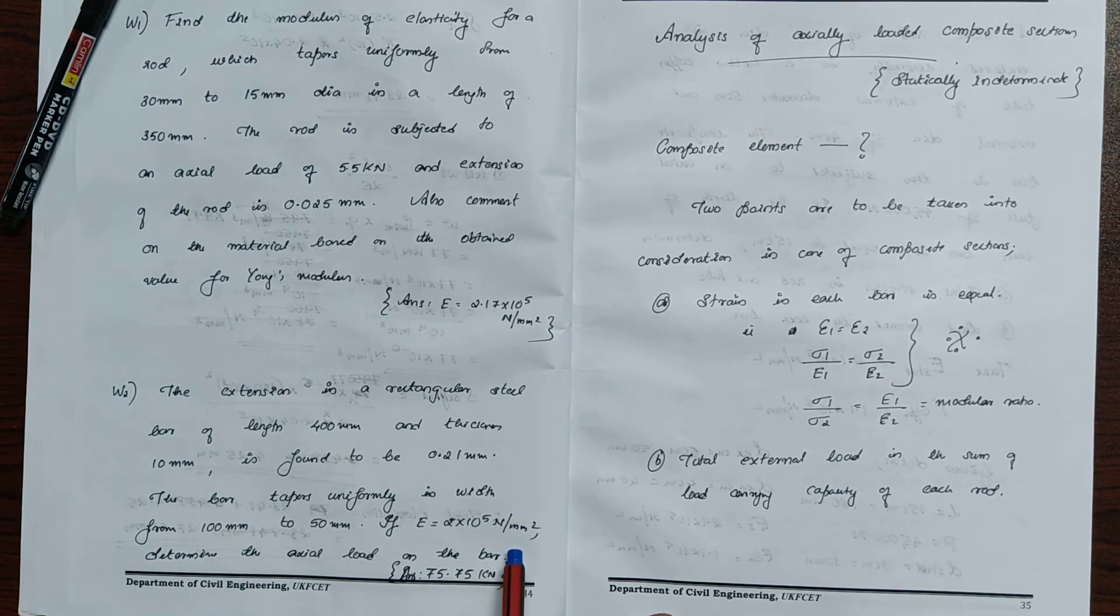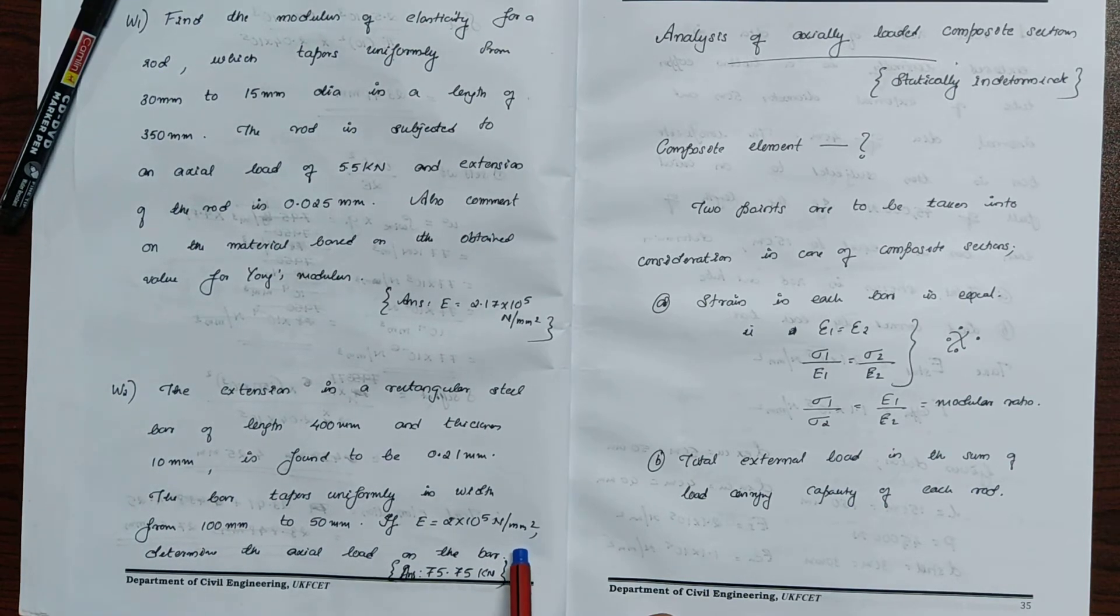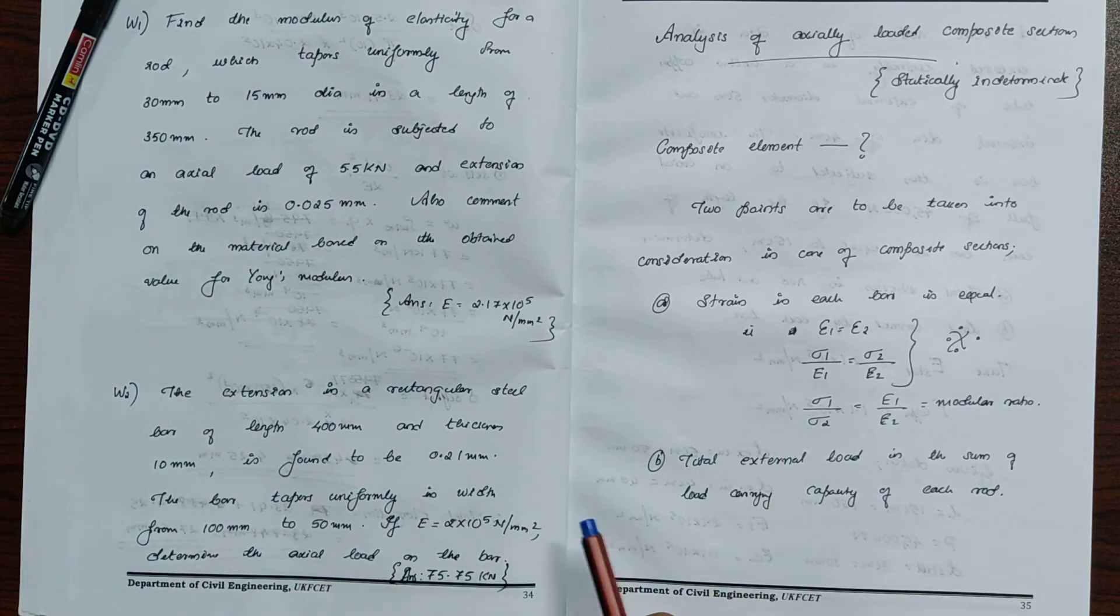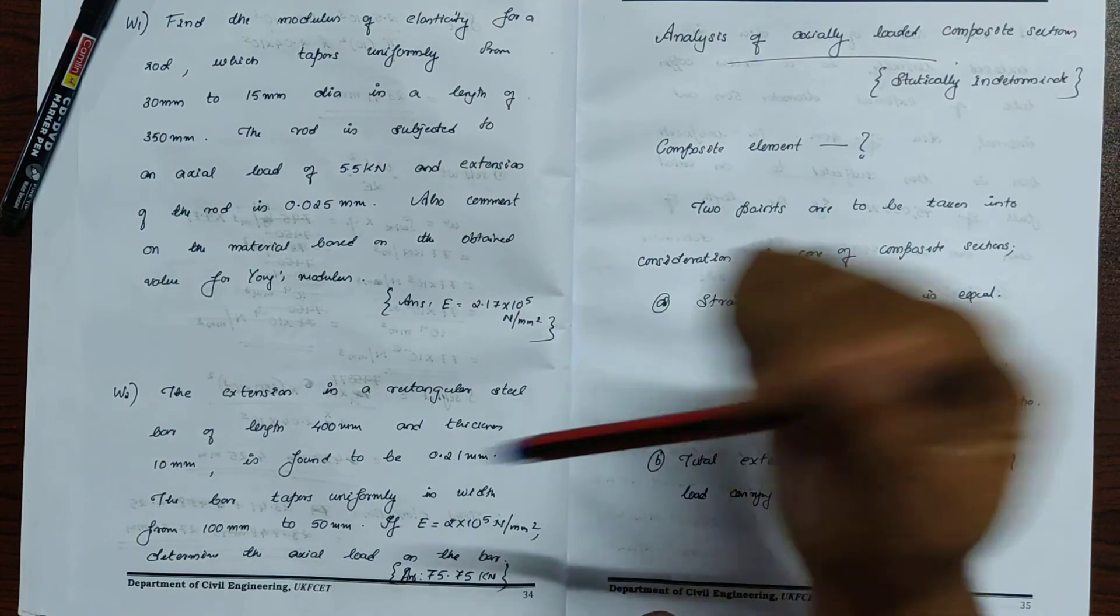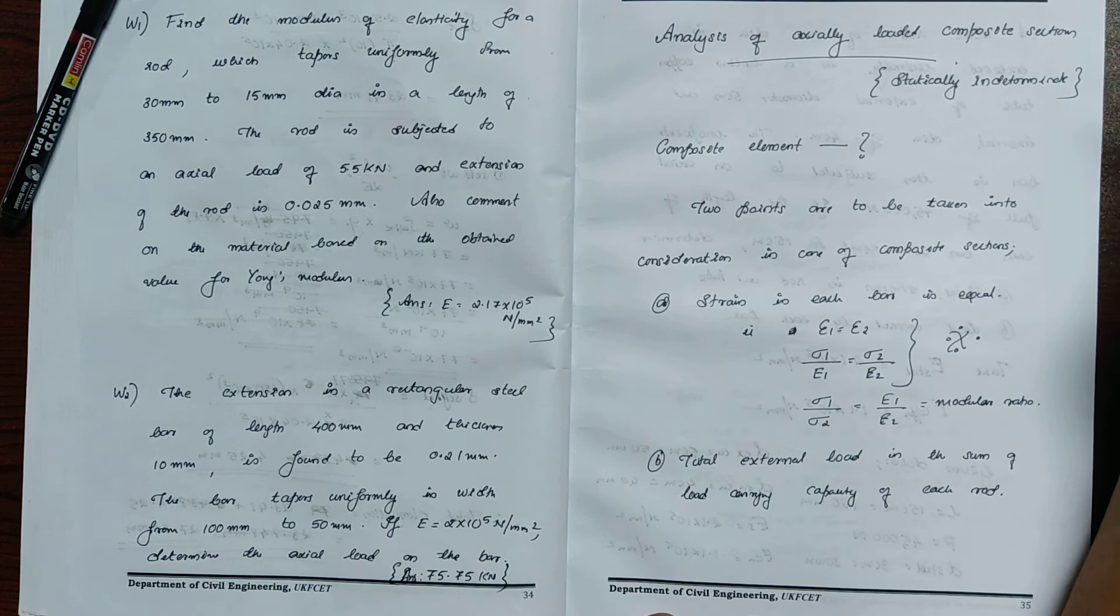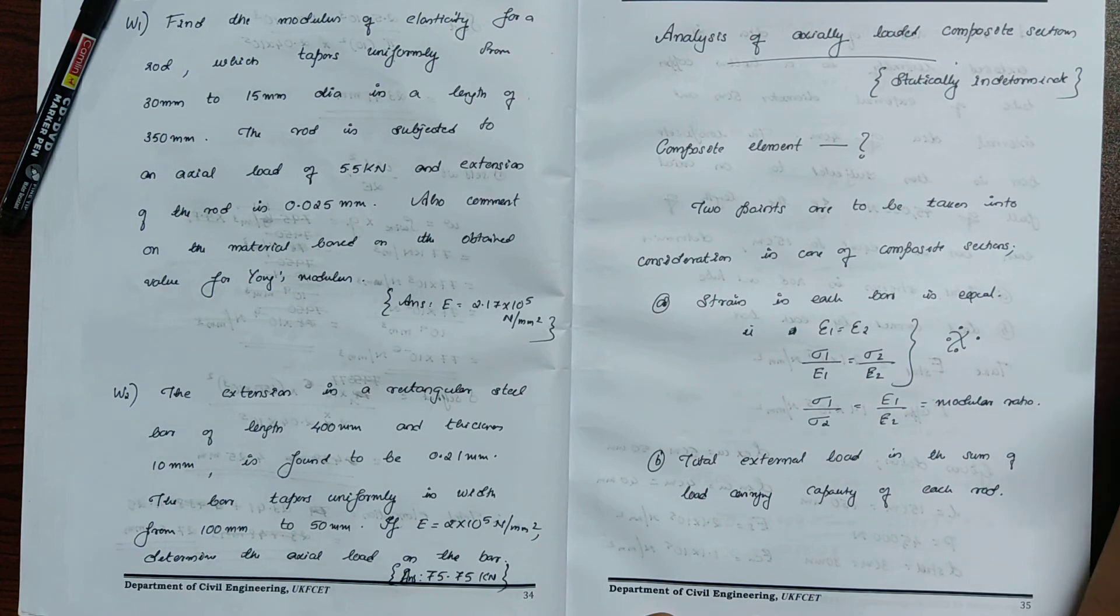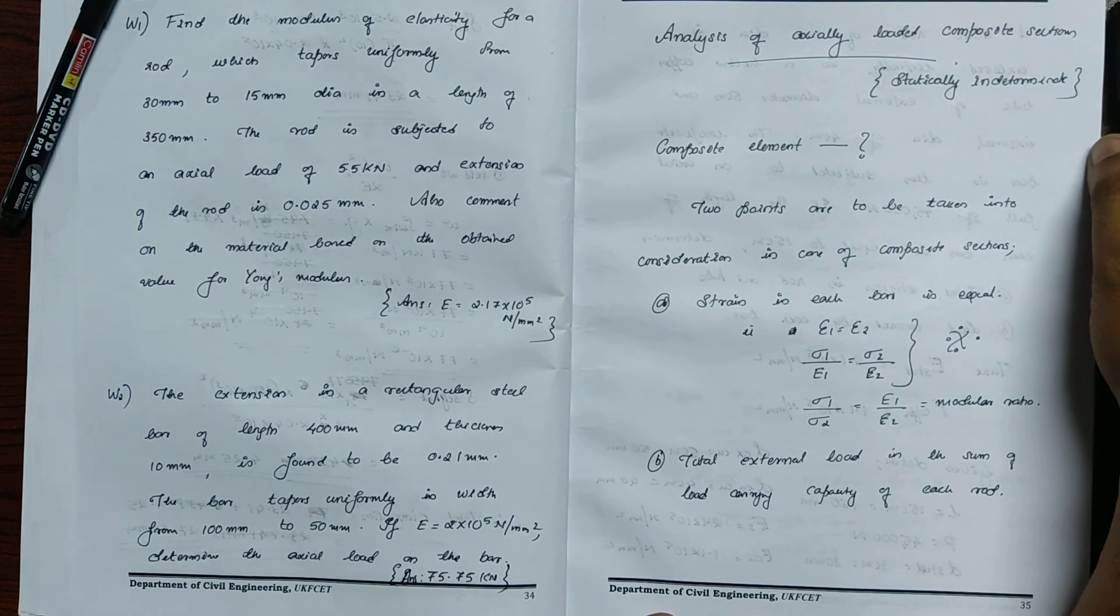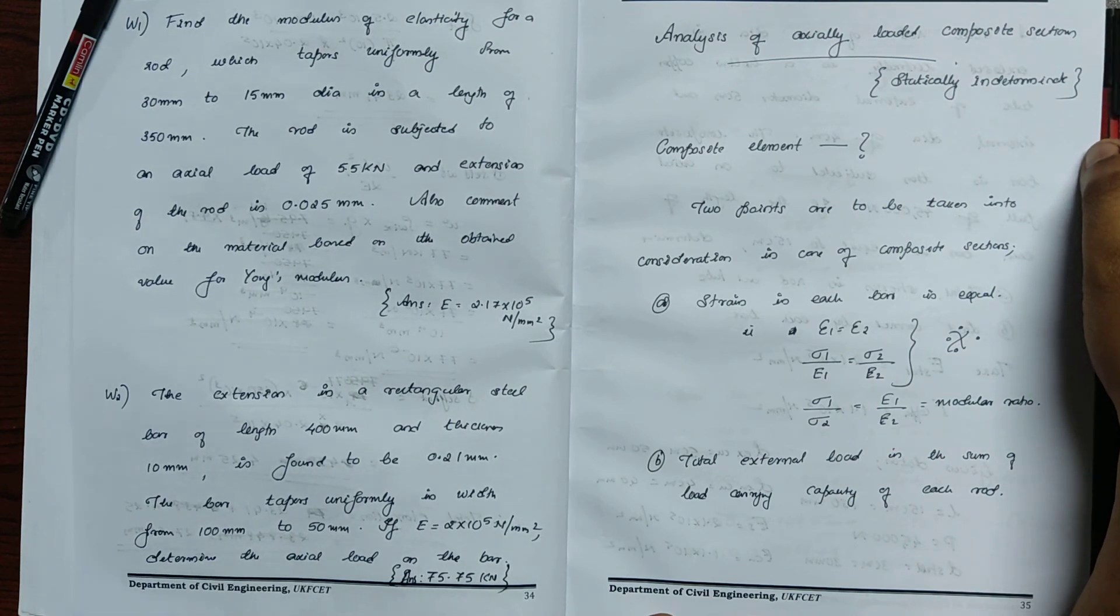If E equals 2 into 10 power 5 N per square meter, determine the axial load on the bar. This is the question we have to work out.